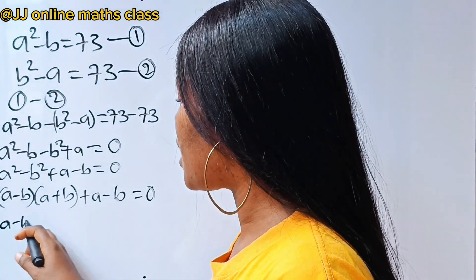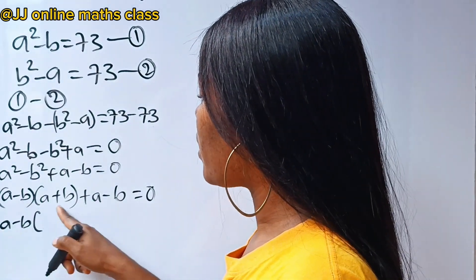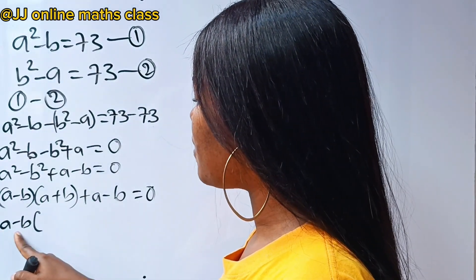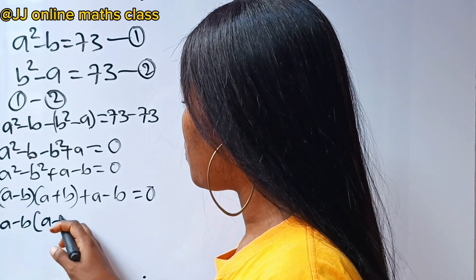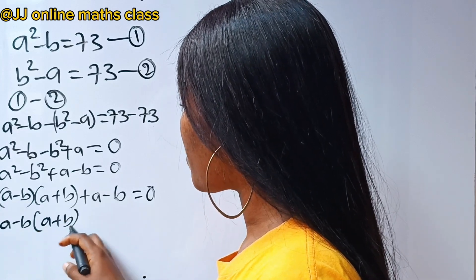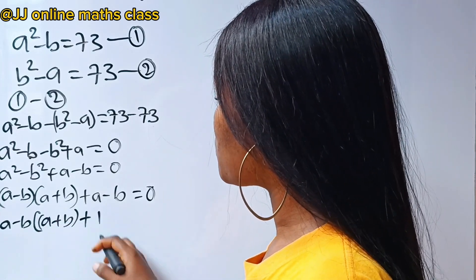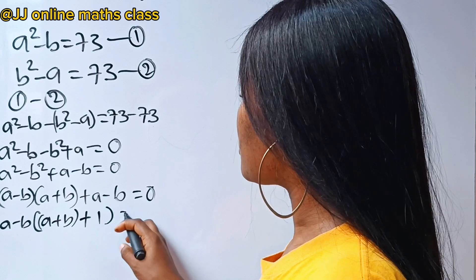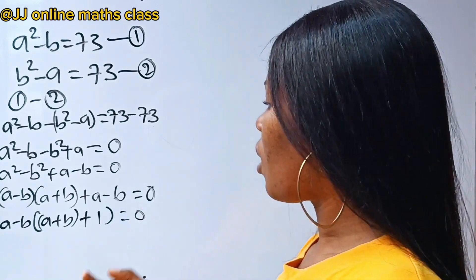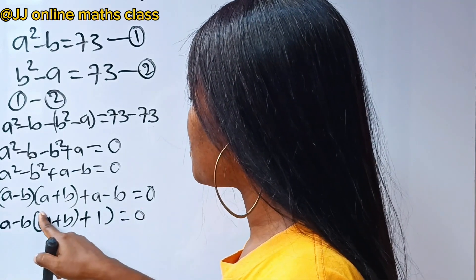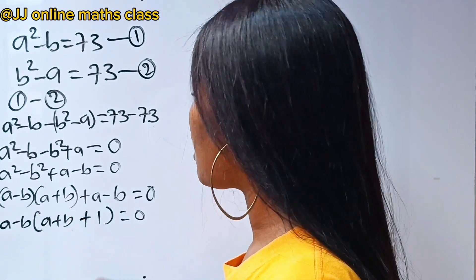We notice that we have a minus b and a minus b, so let's factorize it out. When we divide, we have a plus b remaining, and when it divides the other term, we have plus 1 equal to 0. So we can factor as a minus b times quantity a plus b plus 1 equals 0.